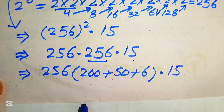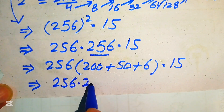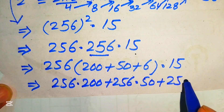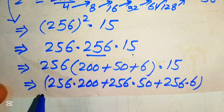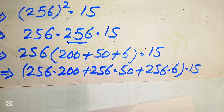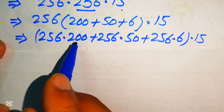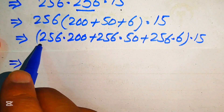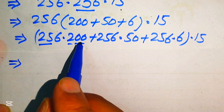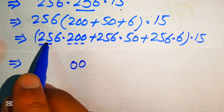We multiply 256 with each of the decomposed values: 256 × 200, plus 256 × 50, plus 256 × 6, and at the last step multiply the resulting answer by 15. Starting with 256 × 200: multiplying by the zeros gives 0, then 2 times 256 gives — 6×2=12, write 2 carry 1; 5×2=10 plus 1=11, write 1 carry 1; 2×2=4 plus 1=5 — giving 51200.